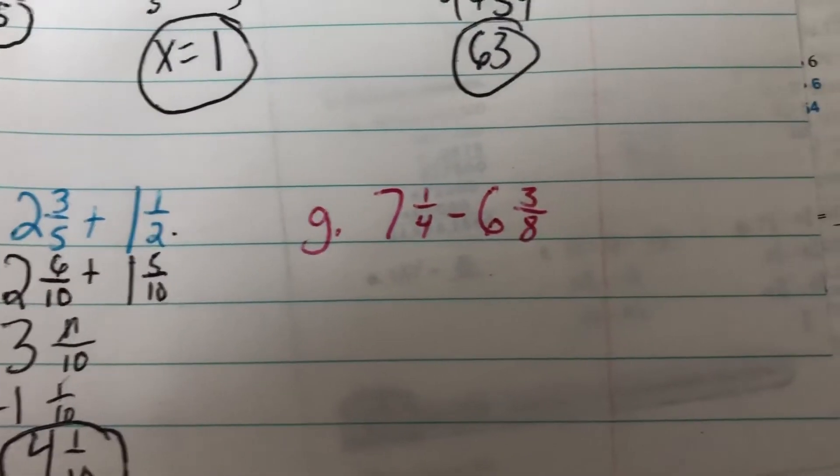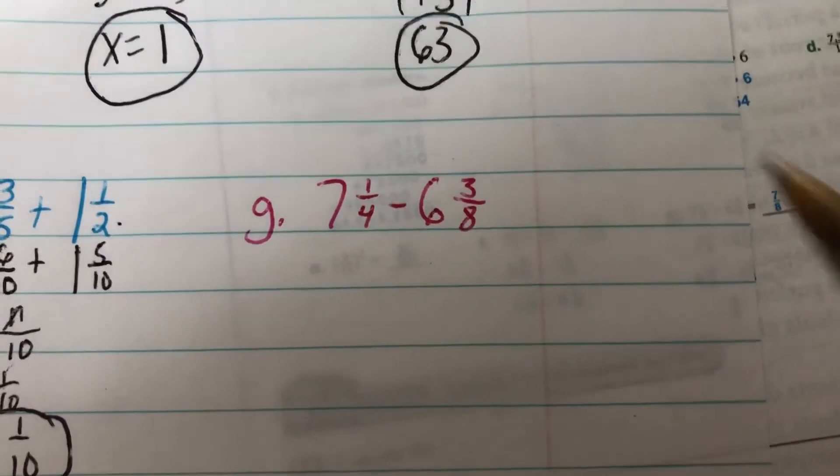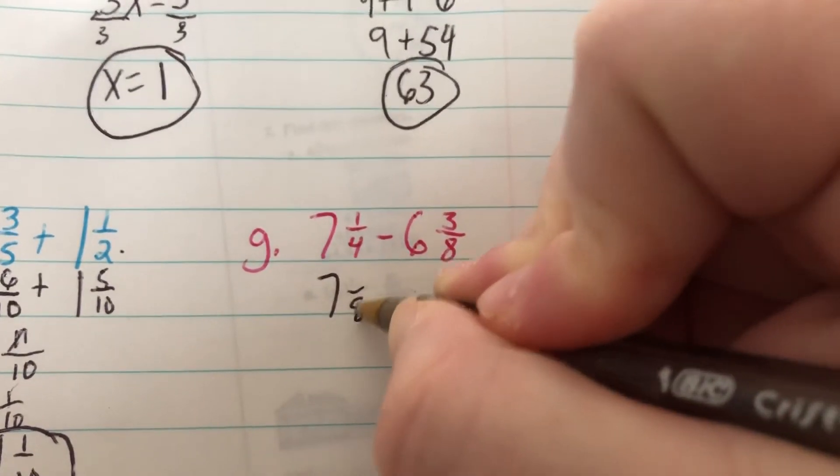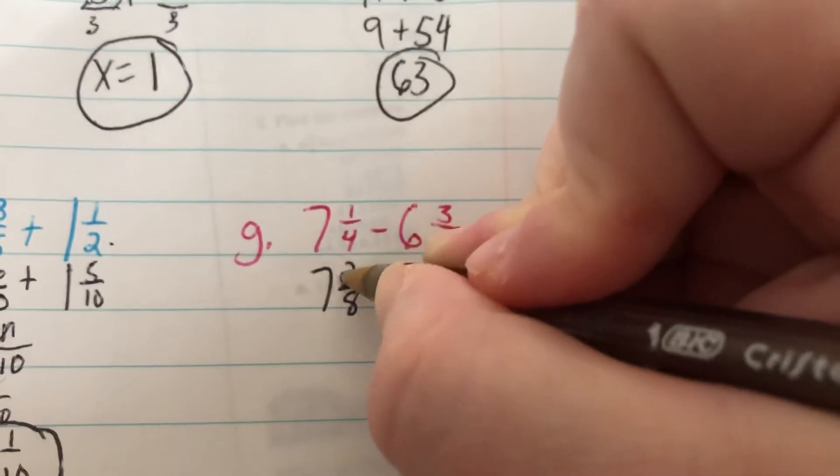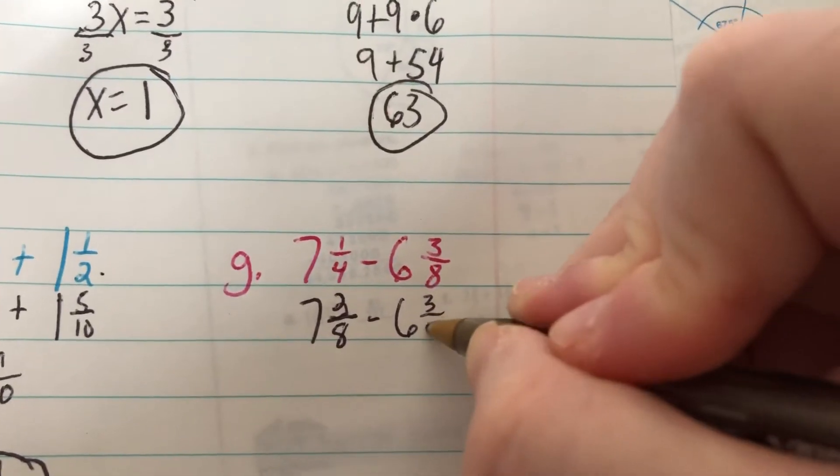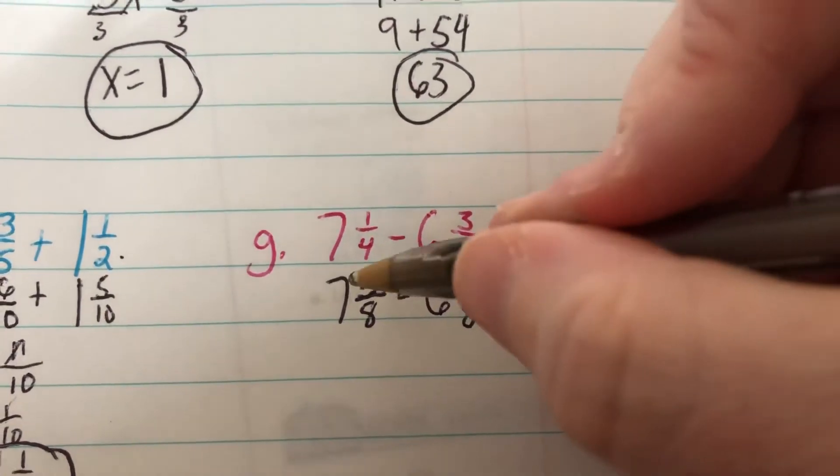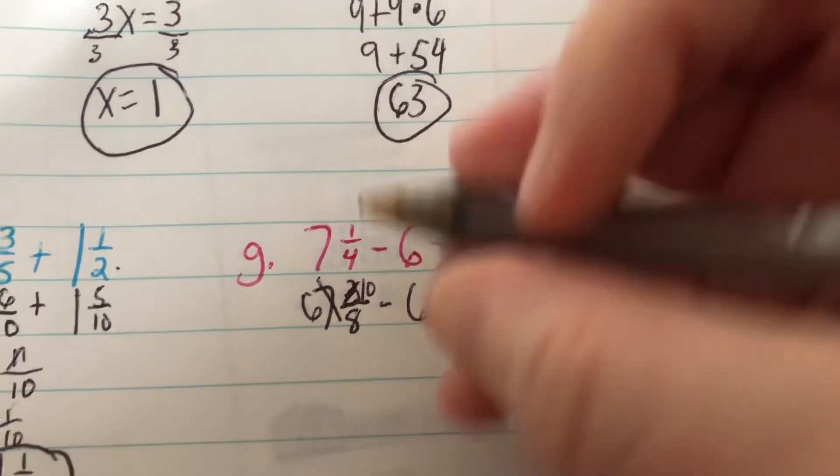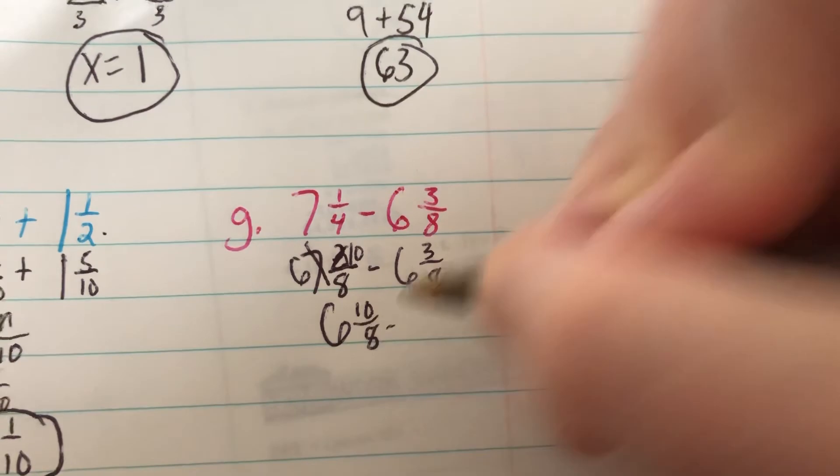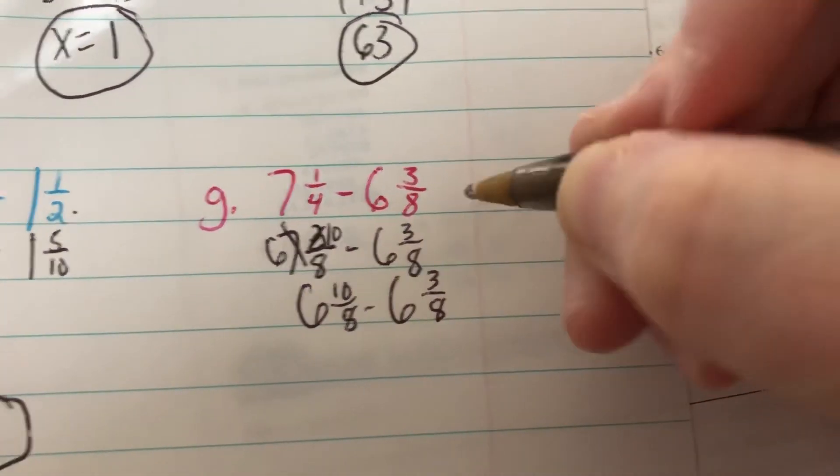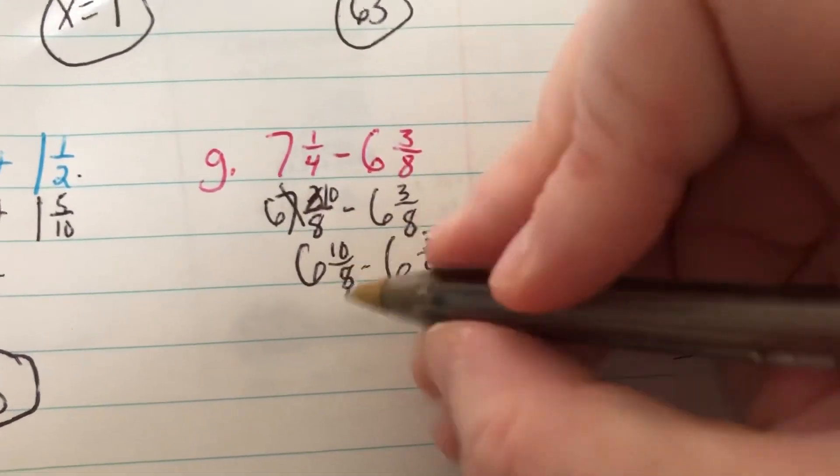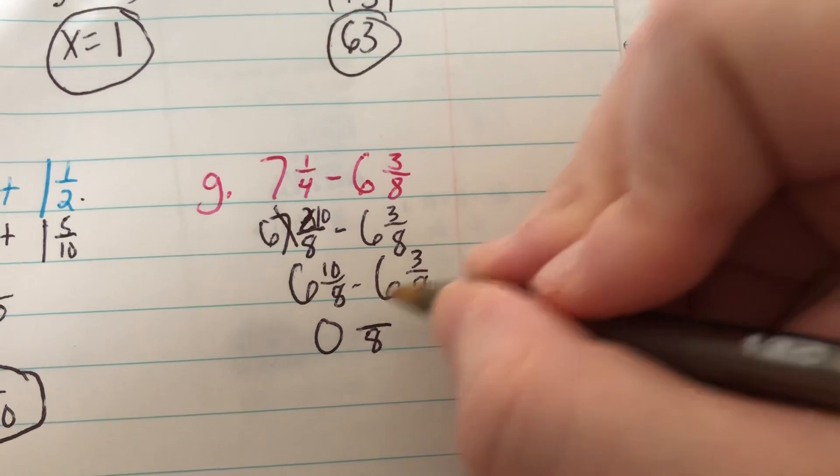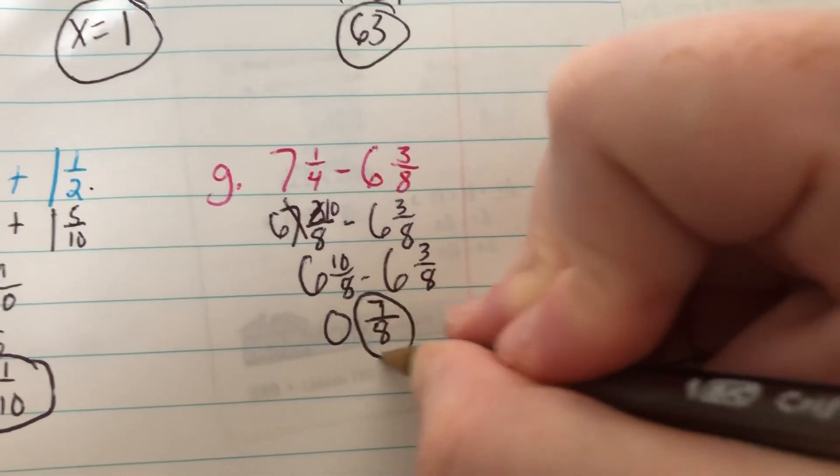On G, we also need to make sure that those have the same denominator. 4 goes into 8, so this side of the fraction will stay the same. I just have to double this one. So it would be 7 and 2 eighths. I had to multiply that 4 by 2. So 1 times 2 is 2. 7 and 2 eighths minus 6 and 3 eighths. I can't take 3 away from 2. So I have to borrow. So I have to make this 6 and add 8 to this. So 8 plus 2 would be 10. So now it is 6 and 10 eighths minus 6 and 3 eighths. Subtract your whole numbers. You get 0. 10 eighths minus 3 eighths. Your eighth is staying the same. 10 minus 3 is 7. You cannot simplify 7 eighths. So it is just 7 eighths.